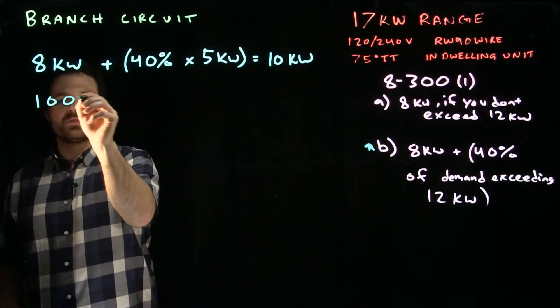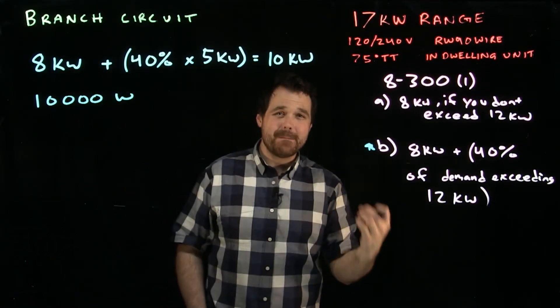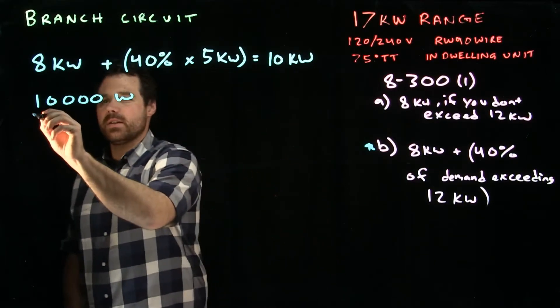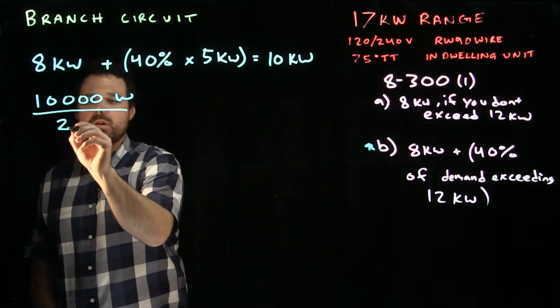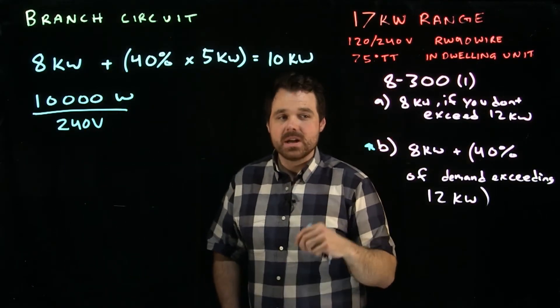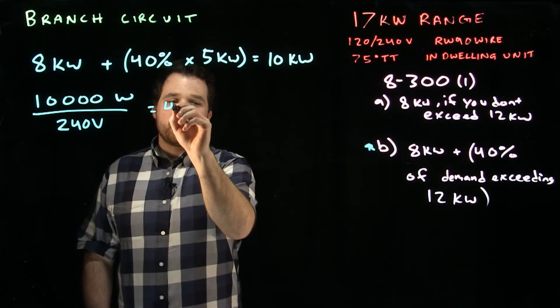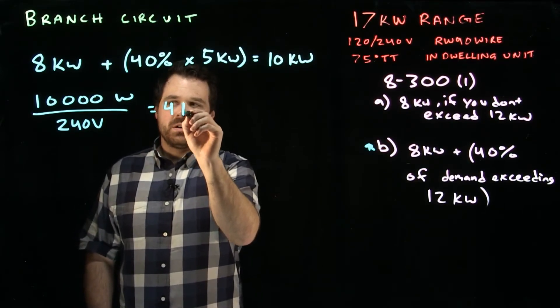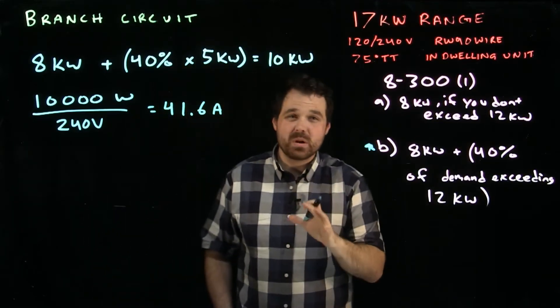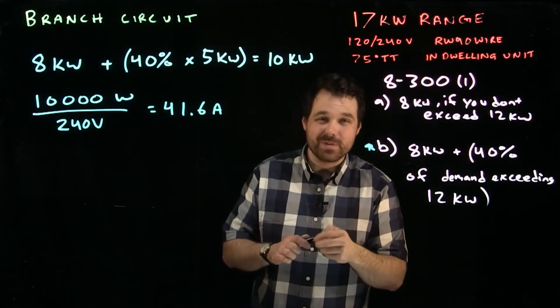So take our 10,000 watts, our 10 kilowatts. We need to now turn that into a minimum ampacity or a required ampacity of our conductor. We divide that 10,000 by 240 volts. We want to use the line to line voltage of our range. So we divide by 240. This gives us 41.6 amps. So 41.6 amps is the minimum ampacity of our range conductor.